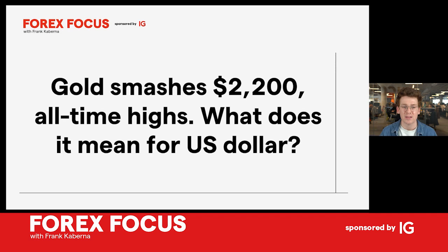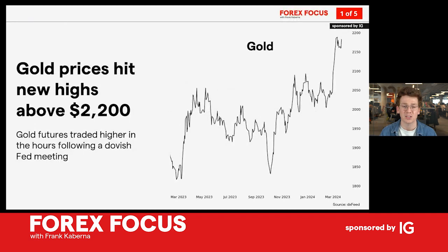Gold prices are on the ascent again after the most recent round of central bank meetings in the US and the UK across the globe. We'll talk about why gold prices are heading higher off of some of that interest rate talk and how that could affect the US dollar. But let's start with the gold price action itself — it has been a crazy run. We spent the last week or two leading up to the Fed and the Bank of England and the Bank of Japan kind of chilling out between $2150 and $2200.